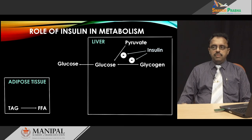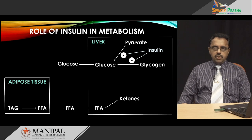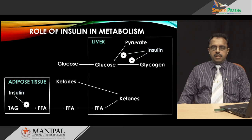In the adipose tissue, whenever we are fasting, the stored fat or triacylglycerol is broken down by lipolysis into free fatty acids, which are released into blood, picked up by various tissues including the liver, which oxidize it to get energy and subsequently produce compounds called ketones or ketone bodies. These ketone bodies are sent out of the liver into the blood to be used as energy fuels during the fasting state. Insulin is a known inhibitor of lipolysis, so insulin plays a very important role in the prevention of formation of ketone bodies.